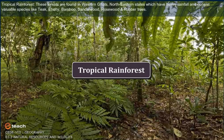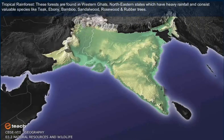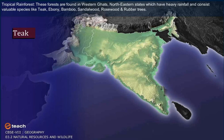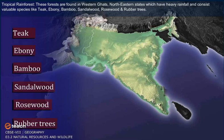Tropical Rainforest. The forests are found in the Western Ghats and northeastern states, which have heavy rainfall and consist of valuable species like teak, ebony, bamboo, sandalwood, rosewood and rubber trees.